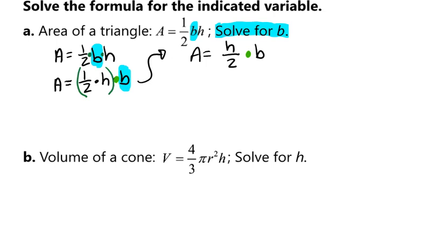We can multiply by the reciprocal, or we can multiply both sides by 2 and then divide by h. We're going to go ahead this time and multiply by the reciprocal, which means we're going to multiply each side by 2 over h, because that enables us to cross off the 2's and cross off those h's. And that's going to leave us with 2 times A divided by h equals b. Now you could also write it as 2 over h times A equals b, and that would also be okay.